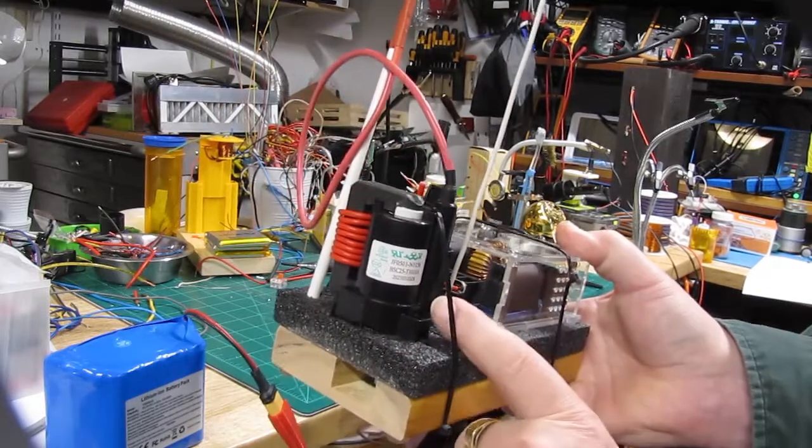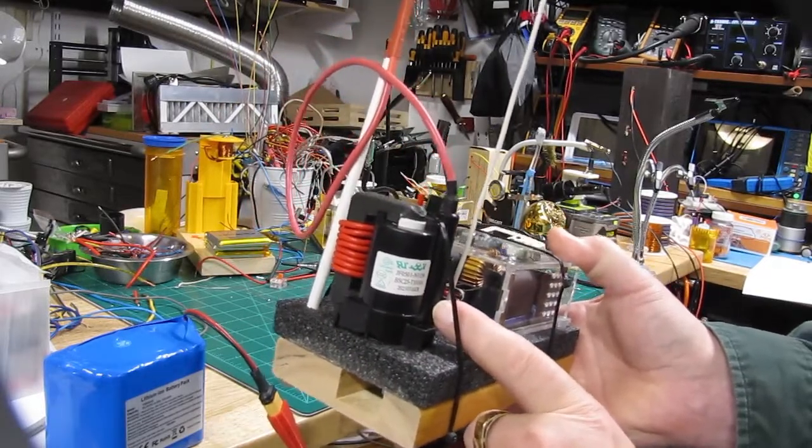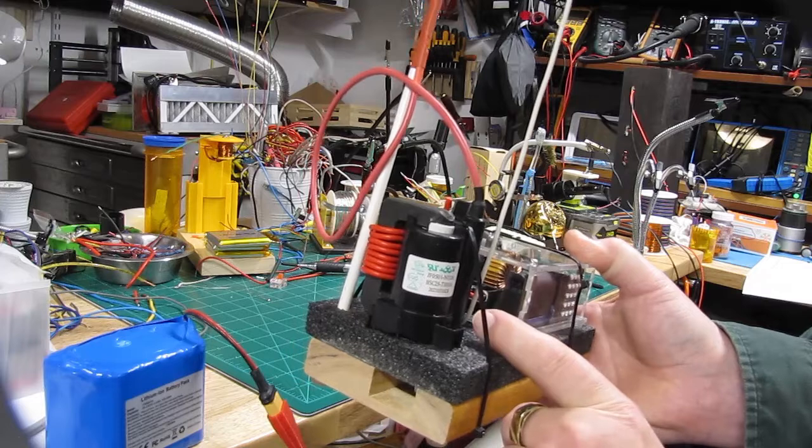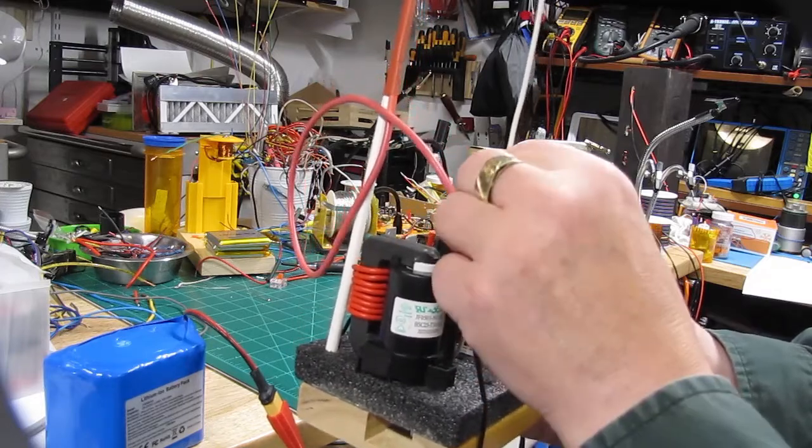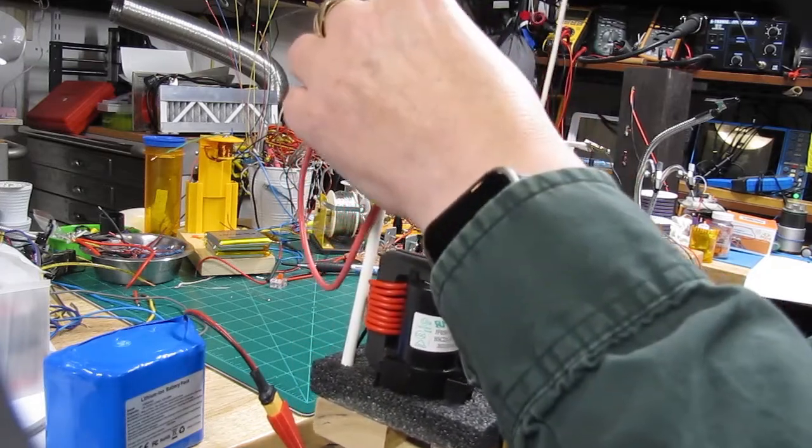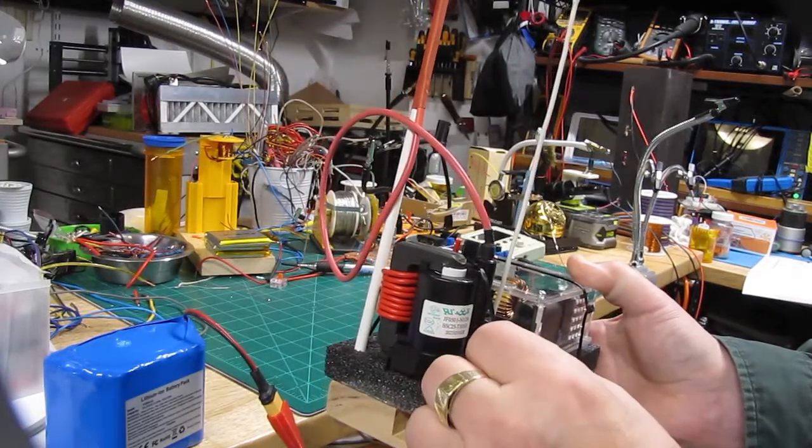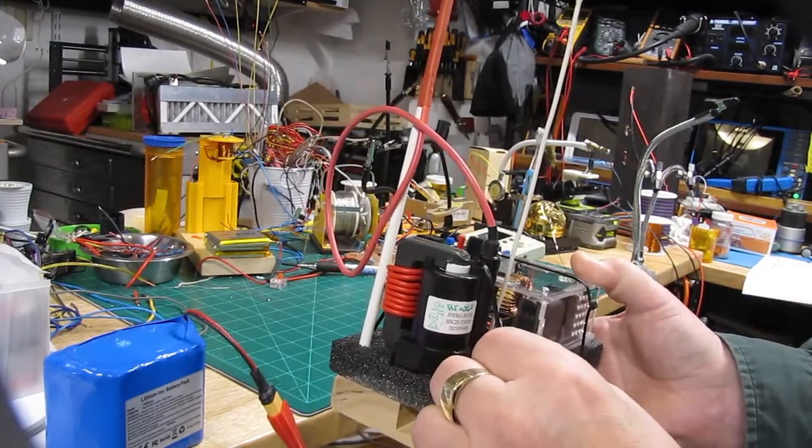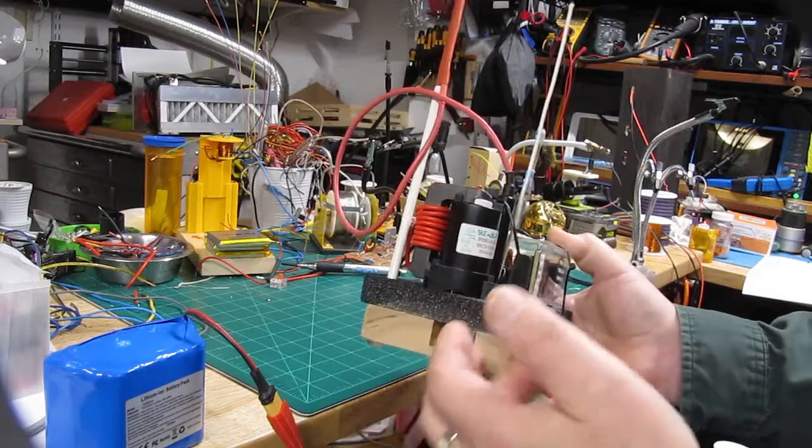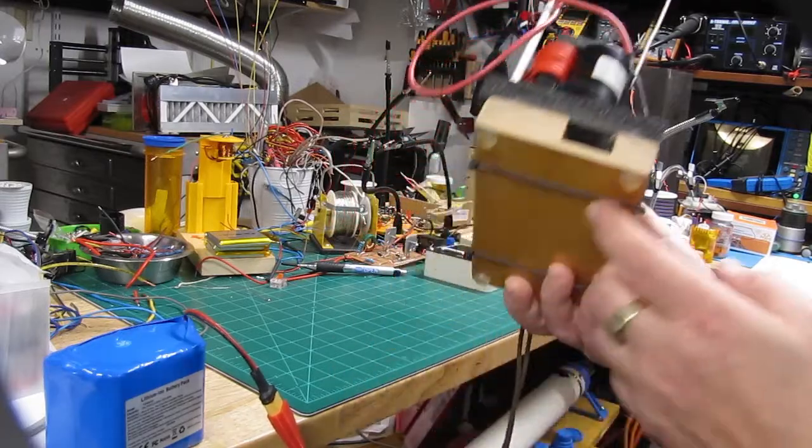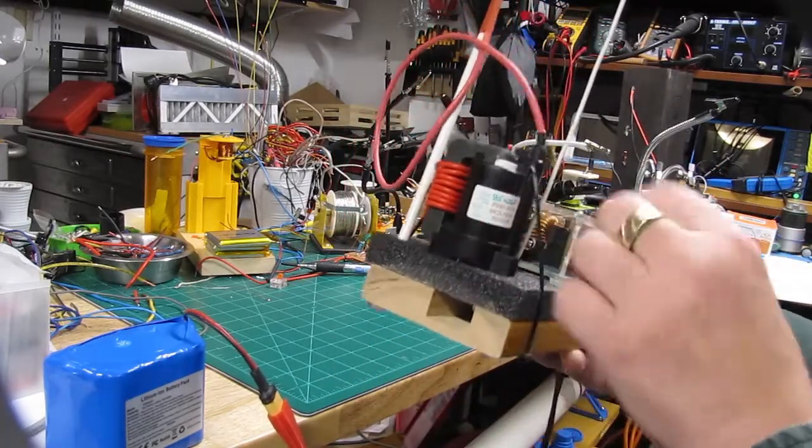Basically on the bottom of this transformer is one point that would ground this high voltage side. There are a bunch of videos on the internet that show you how to do it. Then I put it on a piece of board, put some feet on it, and holding it down with a zip tie.